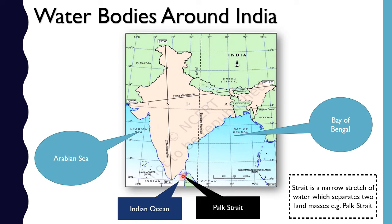For longitudinal extent, India has selected 82.5 degrees as its standard meridian, passing through Uttar Pradesh, shown as a dotted line on the map. The longitudinal extent is from 68 degrees 7 minutes in Gujarat to 97 degrees 25 minutes in Arunachal Pradesh to the east, covering 29 degrees of longitudinal extent.